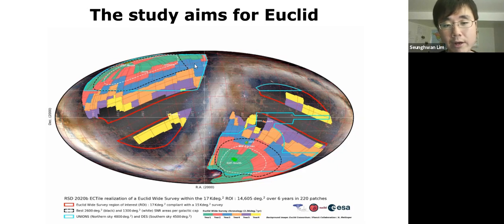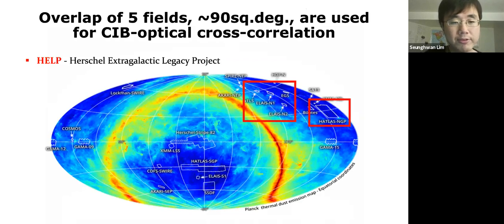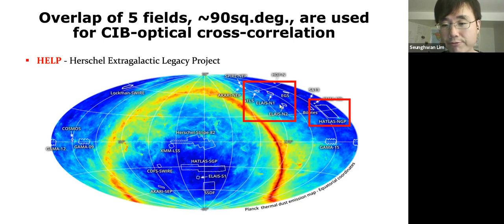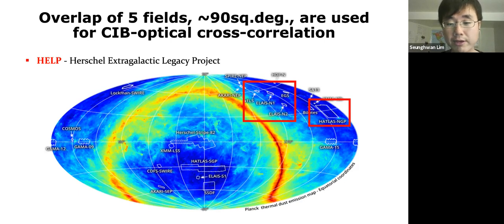From all SPIRE maps, we identified five major fields that overlap between the two surveys. The total combined sky area is about 90 square degrees. These five fields are — inside the red rectangles on the left — FLS, EGS, LSN1, and LSN2, plus on the right a large chunk of sky near the galactic pole, which is the HRS+NGP field. We cross-correlate between the SPIRE and CFIS maps for these five areas.